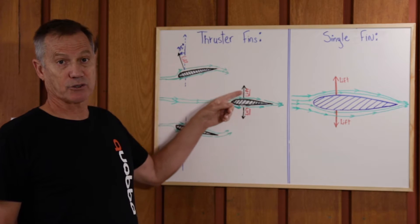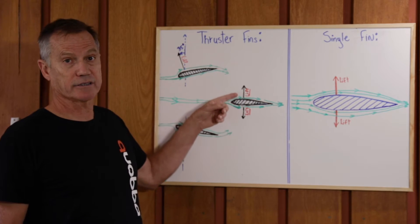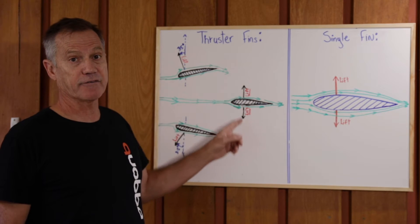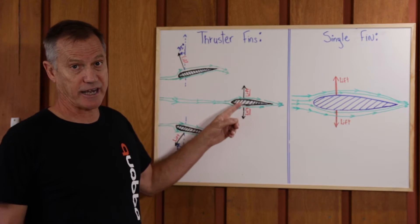It was double foiled, so foiled each side of it, so predominantly just had lift at 180 degrees to each other. Therefore it was very stable.